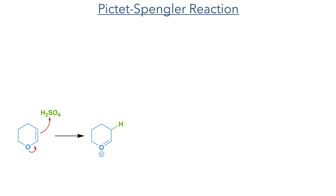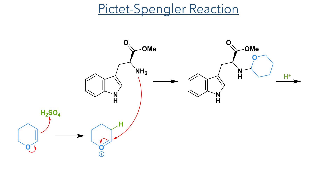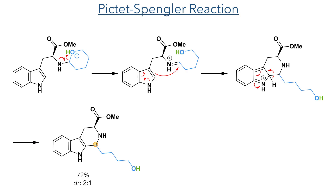Taking this forward, they then carried out a Pictet-Spengler reaction. In this reaction, they used dihydropyrane instead of the more common methods which use an aldehyde. Protonation of DHP with sulphuric acid generates an oxonium electrophile which is attacked by the amine, forming a hemiaminal intermediate. The oxygen of this hemiaminal is then protonated and the carbon-oxygen bond breaks to form an aminium ion. This aminium ion is attacked by the 2-position of the indole and then a proton is lost to restore the neutral charge and complete the reaction in a 72% yield with a 2-to-1 DR.